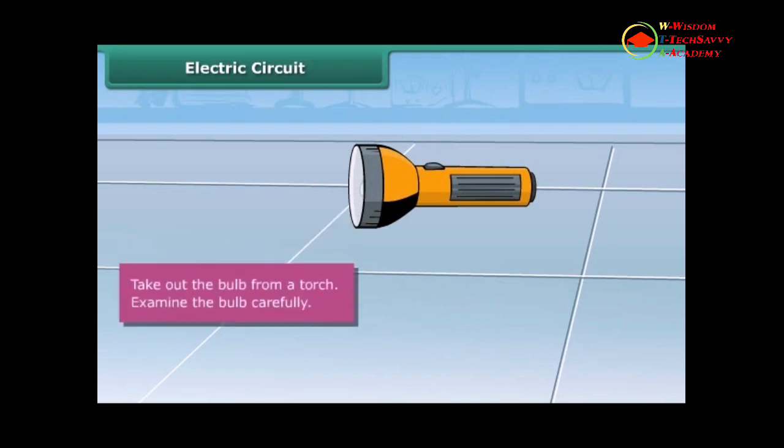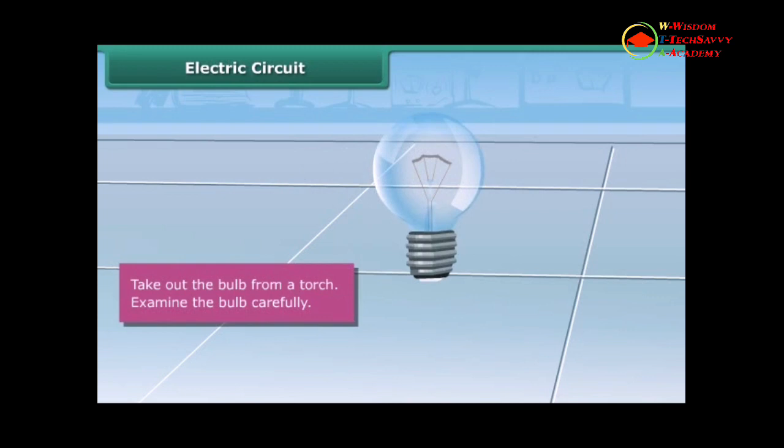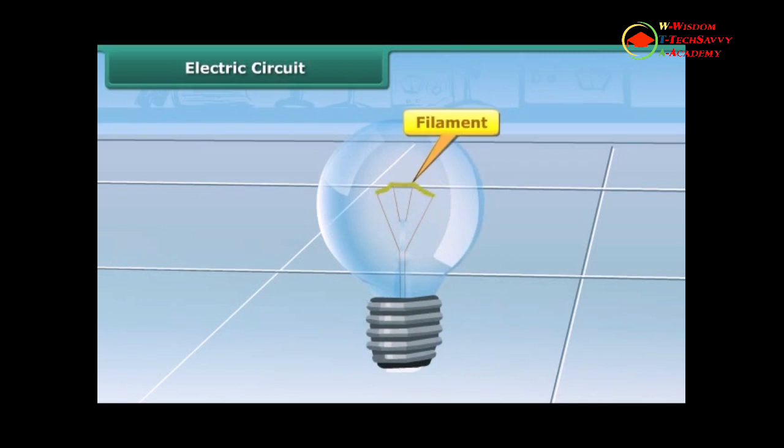Step 1: Take out the bulb from a torch. You can see that the bulb is a small globe of thin glass inside which a coiled filament is fixed on two thick wires. One of these thick wires is connected to the metal case around the base of the bulb. The other wire is connected to the metal tip at the base of the bulb. The metal case and metal tip at the base are two terminals of the bulb.